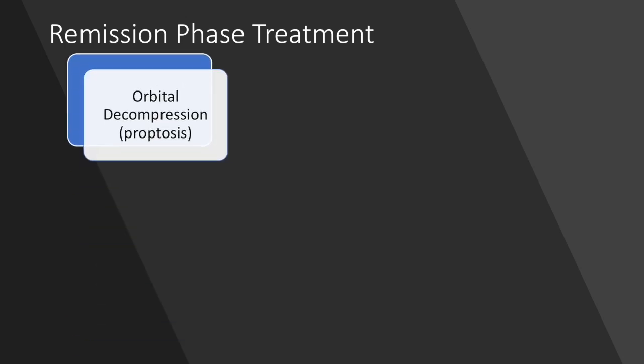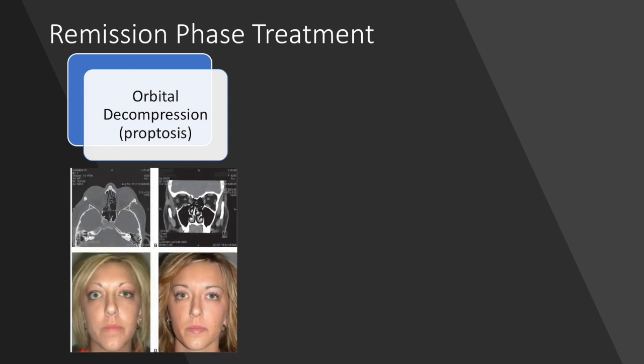We are going to wrap things up by discussing possible options for treatment during the stable remission phase, all of which are surgical in nature. For patients with proptosis, the orbital decompression surgery, mentioned on the previous slide, can be offered. The removal of the roof, lateral, or medial walls of the orbit free the expanded retroocular tissues from their limited confines. One problem with this surgery is it can lead to strabismus or double vision in some patients.